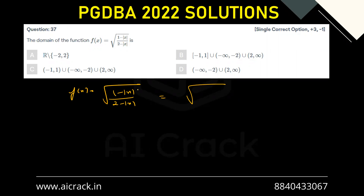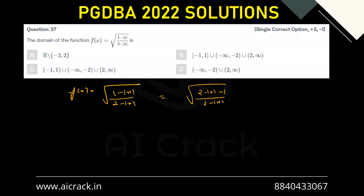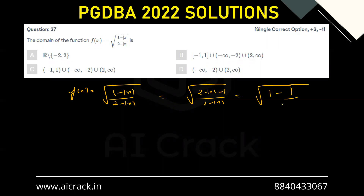What I'll do is add 1 and subtract 1 in the numerator, getting (2 minus |x| minus 1) divided by (2 minus |x|). That gives me the square root of 1 minus 1 over (2 minus |x|). Now with the property of the square root, this quantity 1 minus 1 over (2 minus |x|) should always be less than or equal to 1.